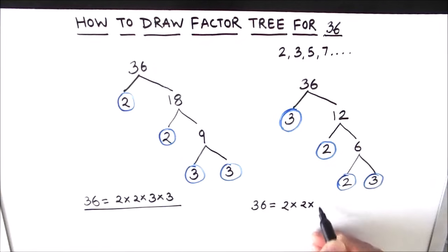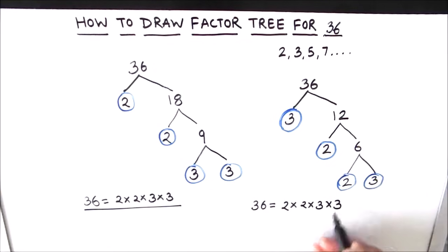From this second factor tree we get the same prime factors: 2 times 2 times 3 times 3. This is how we draw a factor tree for number 36. I hope this video is helpful to you. If you like the video, please hit the like button and subscribe to my channel for more math videos. Thanks for watching.